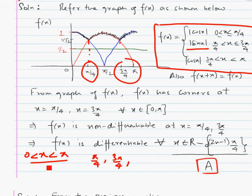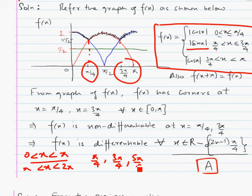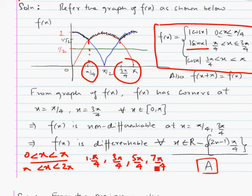Now if we look at the next interval π to 2π, non-differentiability will be at 5π by 4 and 7π by 4, because all three graphs are periodic and the pattern shifts by π. The pattern is: 1×(π/4), 3×(π/4), 5×(π/4), 7×(π/4) — so the odd multiples of π by 4 are the points where the function is non-differentiable. The function is differentiable for all values of x except odd multiples of π by 4.